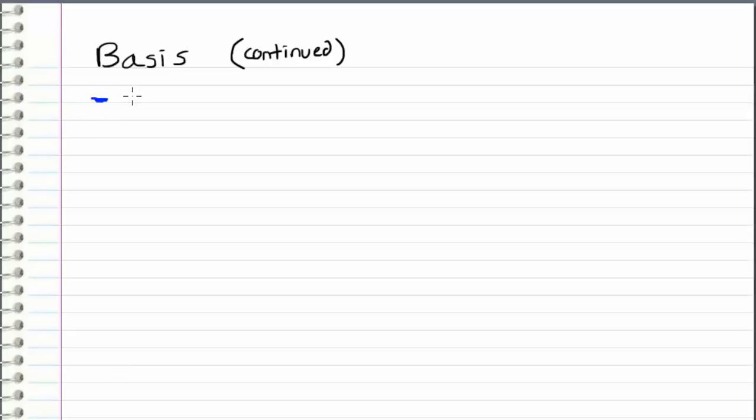So just to recap, a basis for a space spans the entire space. And we went over that in the previous video. And we also said that a basis contains linearly independent vectors.